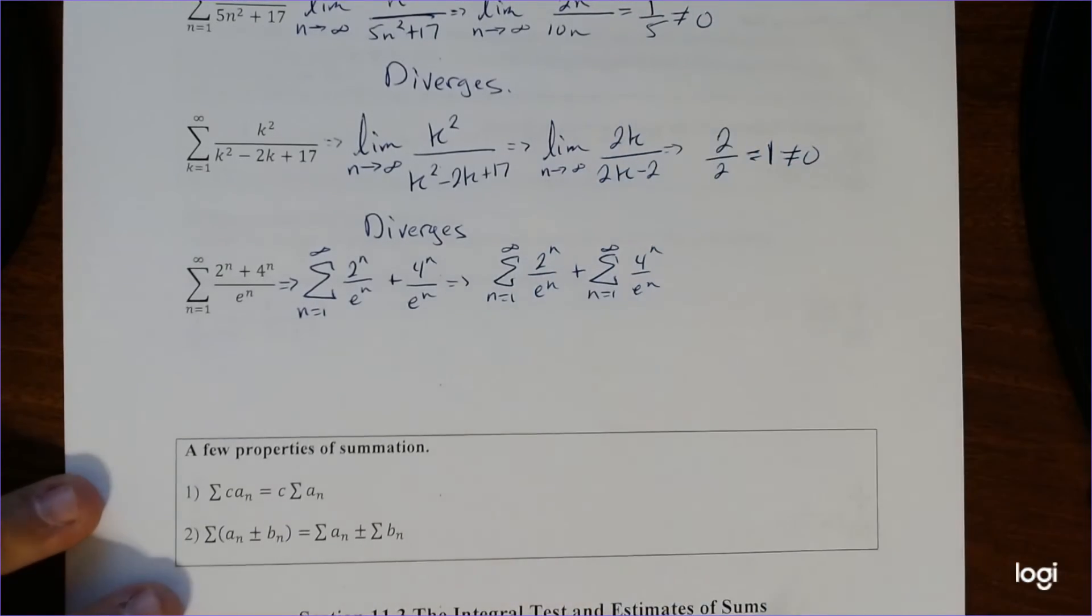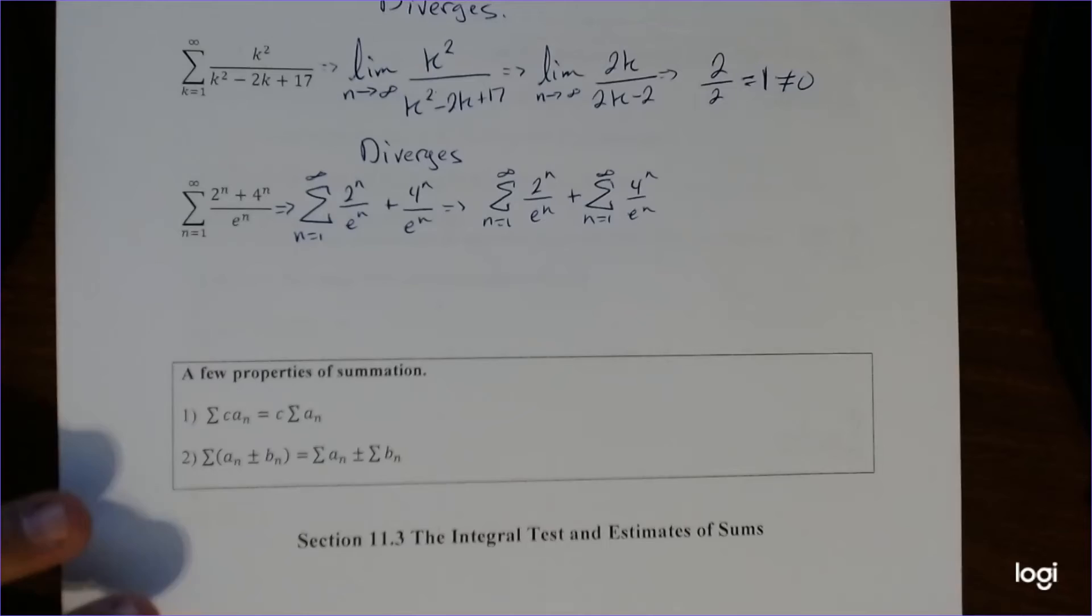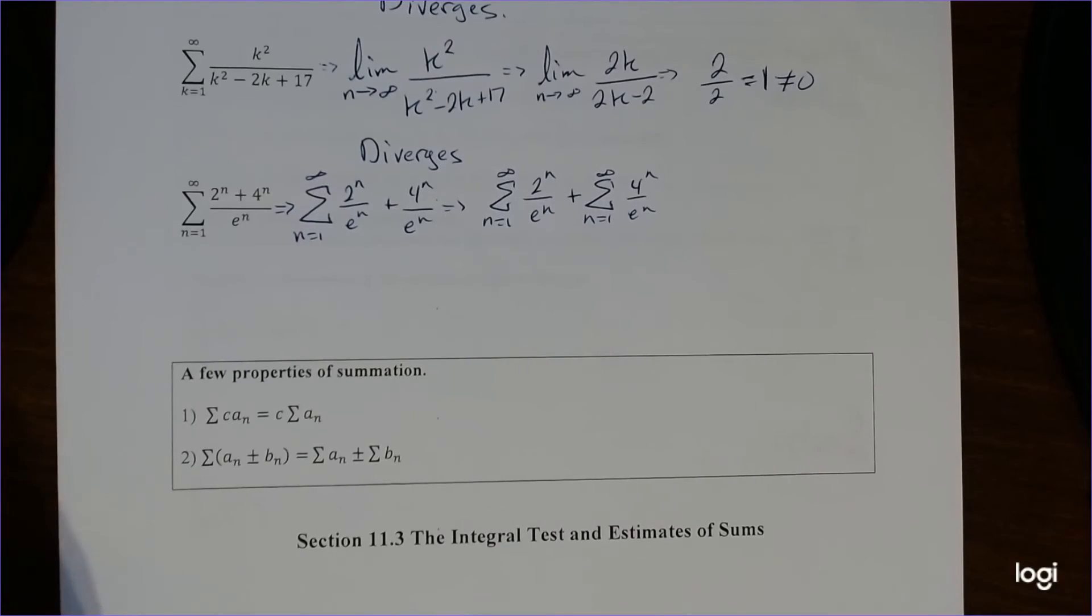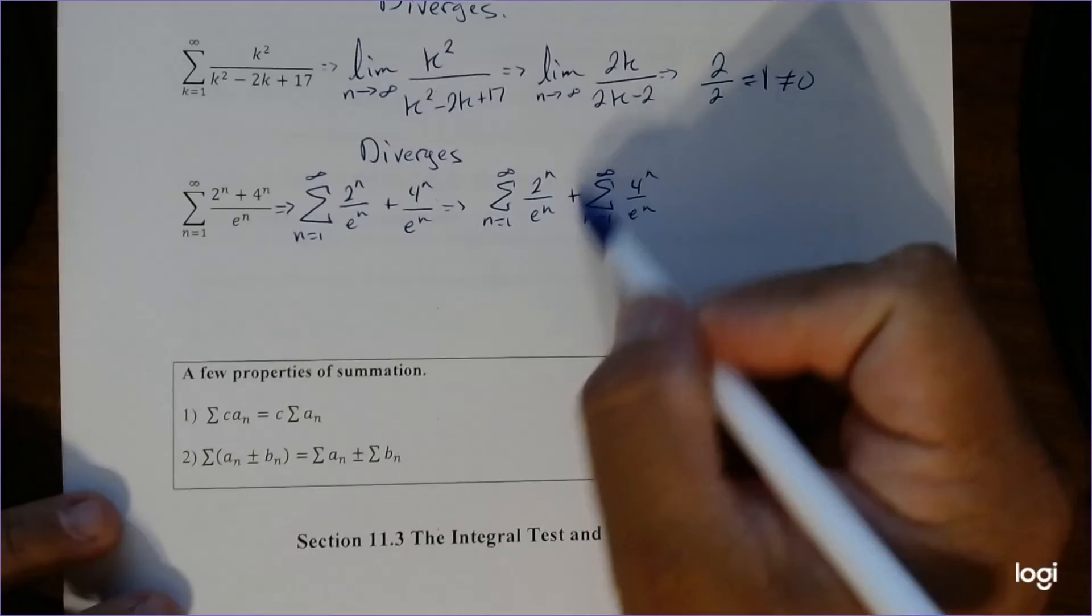And now we're going to do each one individually and see if they both converge or both diverge, or whatever, and vice versa, okay? So we're going to use the same process as we did earlier. It's going to the n, so we're going to take one out.